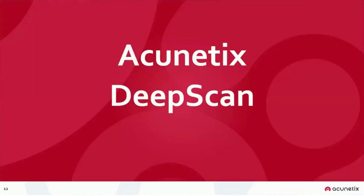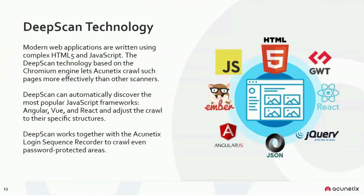Starting with deep scan technology — our crawling technology. The aim is to define site structure and find all your assets. Our mantra is: if you cannot crawl it, you cannot scan it. We provide the best support for HTML5 in the market thanks to our integration with WebKit in what we call deep scan. It browses a site like a real user, executes and analyzes JavaScript, and accurately crawls AJAX-heavy, client-side, single-page applications. It supports popular JS technologies such as Angular, Vue, and React, as well as Google Web Toolkit. Deep scan works together with LSR to crawl password-protected areas.